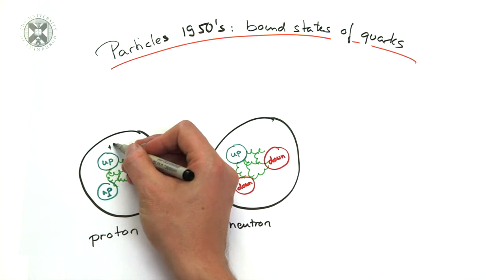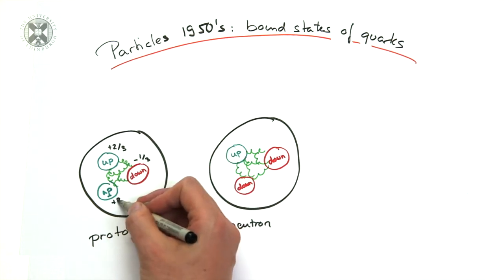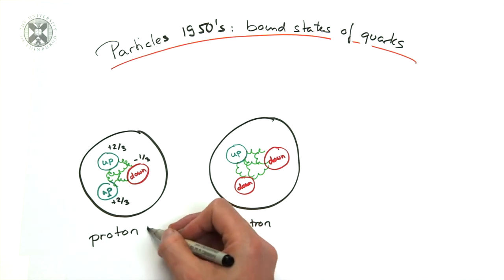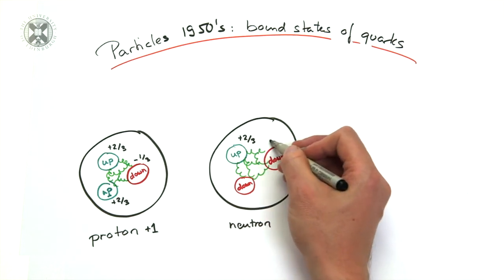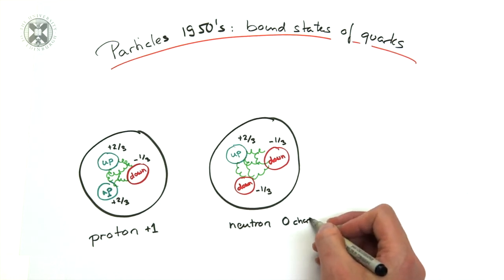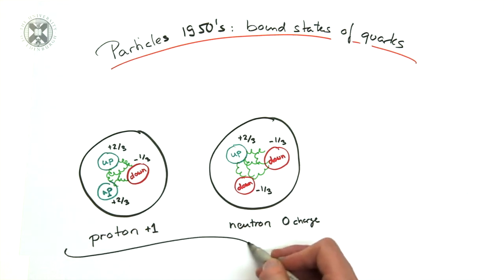The up quark and down quark carry two-thirds and minus one-third electric charge respectively. Therefore, the proton made out of up, up, down carries two-thirds plus two-thirds minus one-third equals one unit of electric charge.